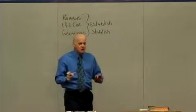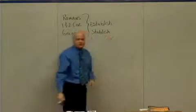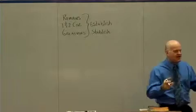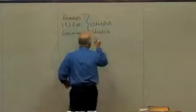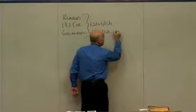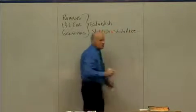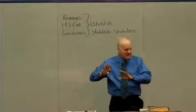Those two words — 'establish' and 'established' — both occur in Romans. 'Establish' means to get you going, to get that foundational doctrine laid. By the end of the book of Romans, Paul talks about stabilizing you. A foundation has been laid, and now you need to be stabilized on that foundation. It's going to take all four of those epistles to get us established.